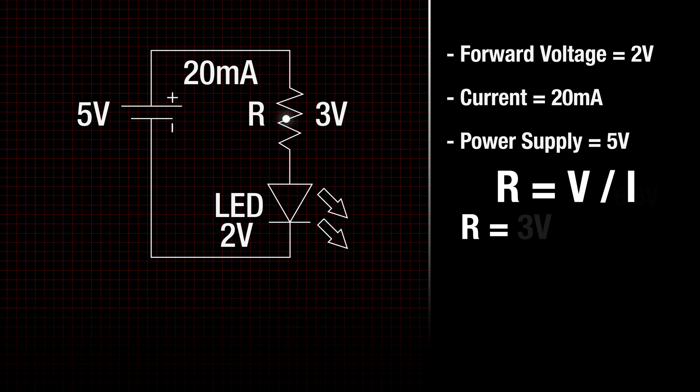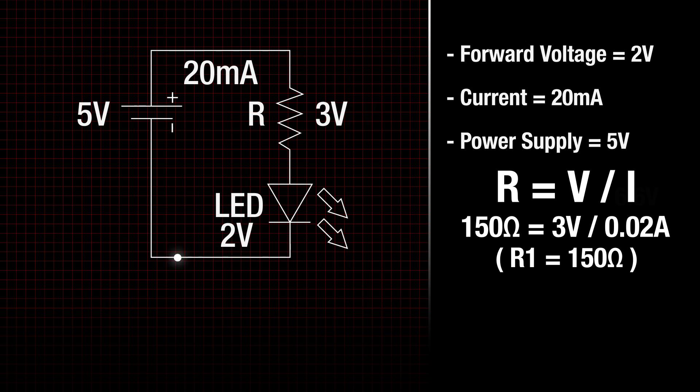Therefore, resistance equals 3 volts divided by 20 milliamps or 0.02 amps. This gives us a value of 150 ohms.